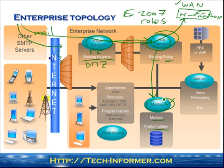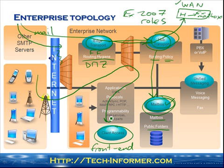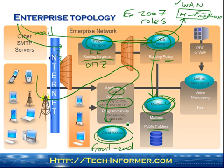So that's how we get to the actual mailbox. We've also got two other roles. The first one is the Client Access Server — this is what used to be called the front-end server in Exchange 2003. As people on the internet come through both firewalls and hit this Client Access Server, it runs the Outlook Web Access engine and the internet access protocols for mail. The Client Access Server in turn communicates with the mailbox role.